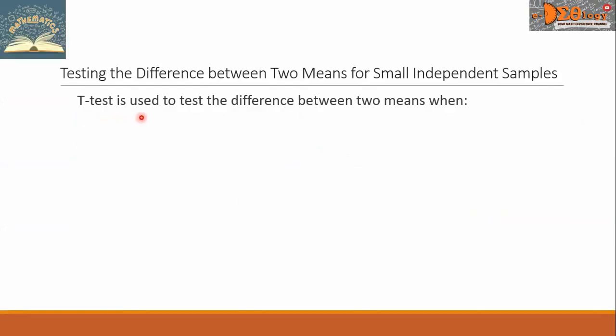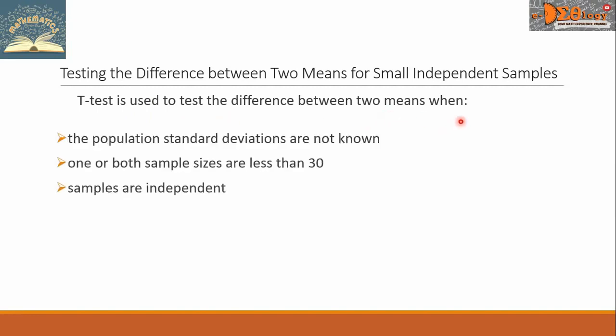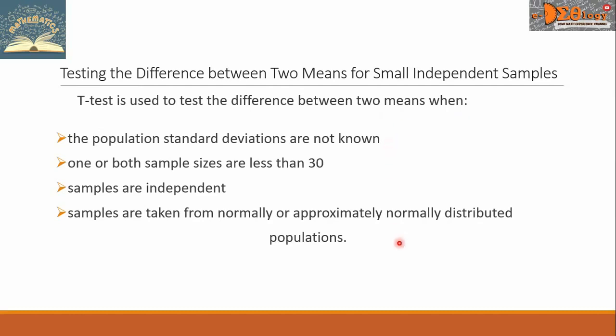The t-test is used to test the difference between two means when these four conditions are satisfied. Number one, the population standard deviations are not known. Second, one or both sample sizes are less than 30. Third, samples are independent. Fourth, samples are taken from normally or approximately normally distributed populations.